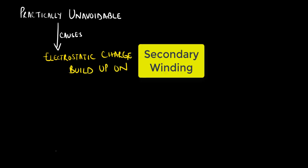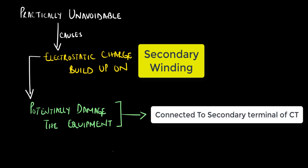They are practically unavoidable, and they cause an electrostatic charge to build up on the secondary winding, which causes high secondary voltages and can become extremely dangerous for electrical workers. Furthermore, it can potentially damage the equipment connected to the secondary terminals of the current transformer. It is for these reasons why grounding a current transformer is highly recommended.